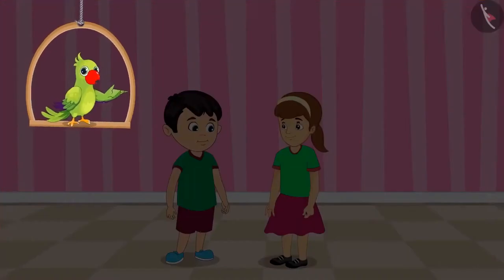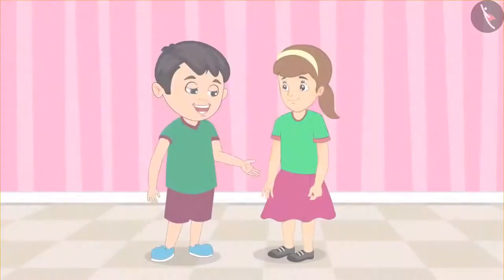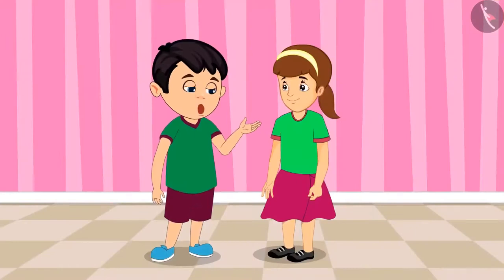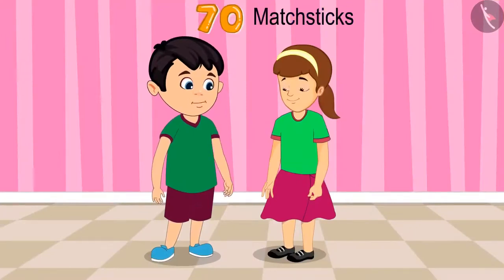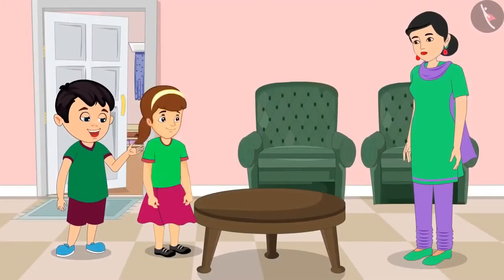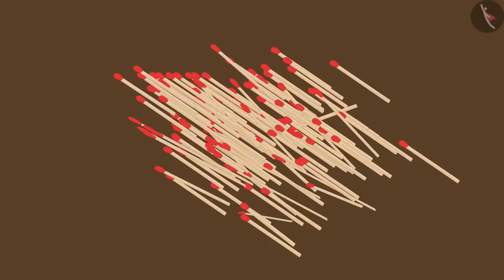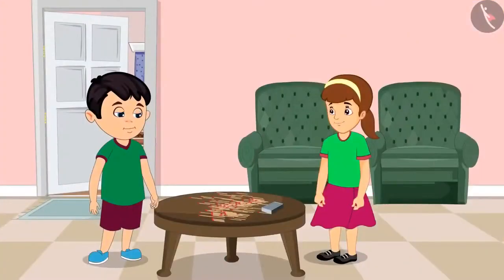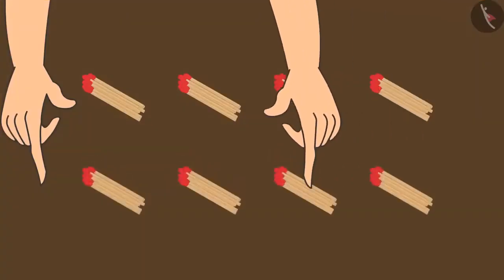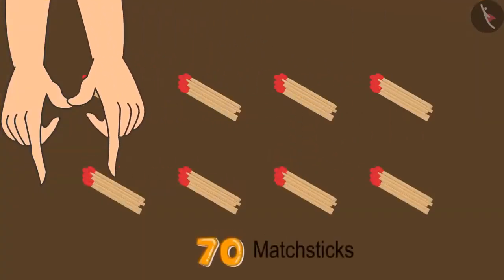Chotu and Arti are thinking of making a model today with matchsticks. Arti, we will need 70 matchsticks for the model. Alright, Chotu. Let us ask mummy for matchsticks. Mummy, please give us matchsticks. We want to make a model using them. Okay, take these. Oh, Chotu. These are too many matchsticks. Let us take 70 out of this pile. Please make bundles of 10 each of these so that counting becomes easier. Alright, I will count. So these are now 70 matchsticks.